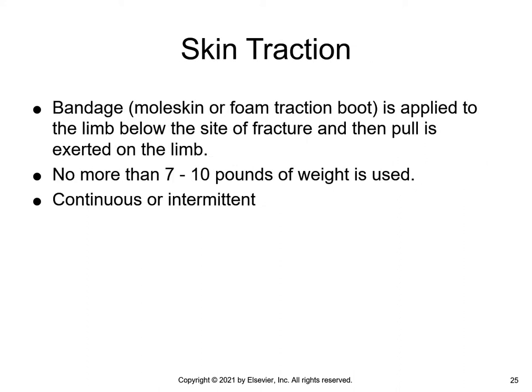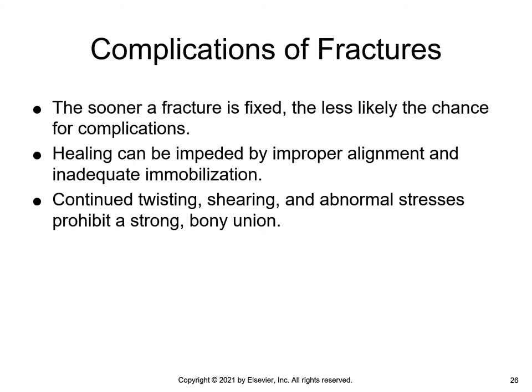For skin traction, a bandage or foam traction boot is applied to the limb below the site of the fracture and a pull is exerted on the limb. No more than 7 to 10 pounds of weight will be used for skin traction. Continued twisting, shearing, and abnormal stress prohibits a strong bony union. Inadequate levels of serum calcium and phosphorus, vitamin deficiency, and generalized atherosclerosis — which deprives the healing site of adequate blood supply — can complicate a fracture by delaying healing.